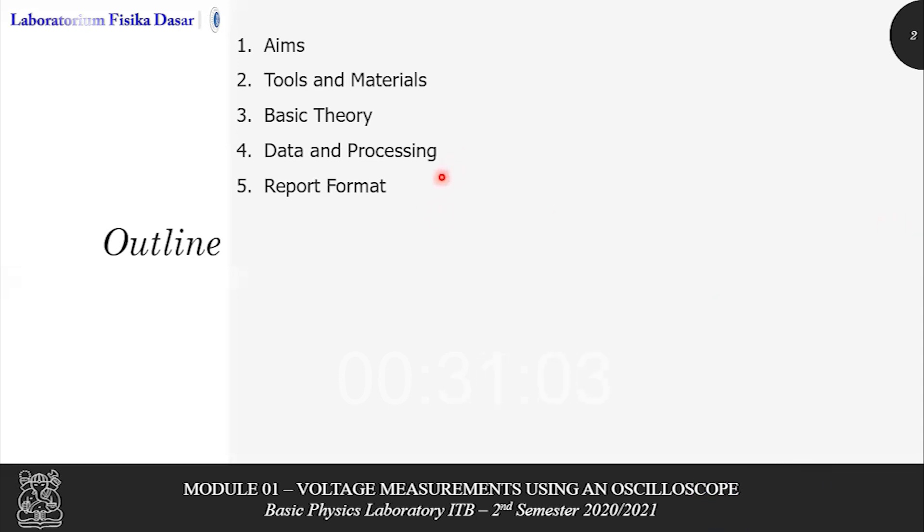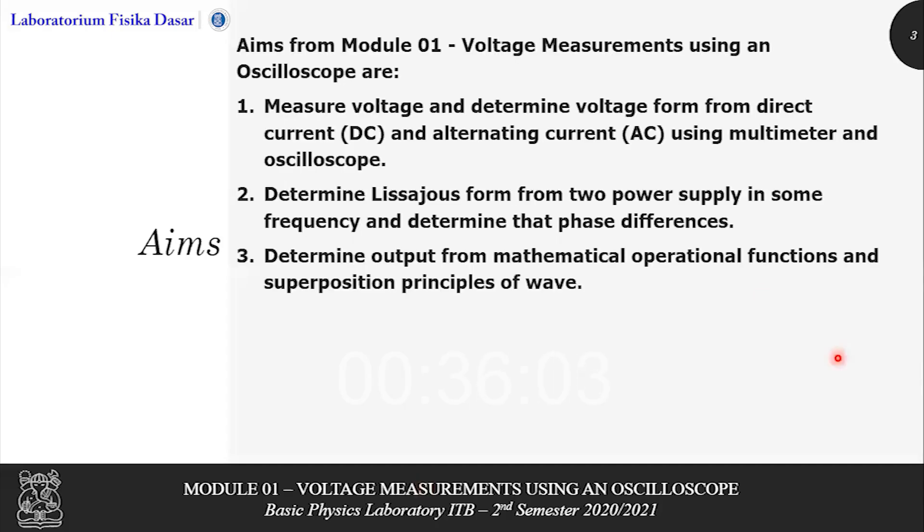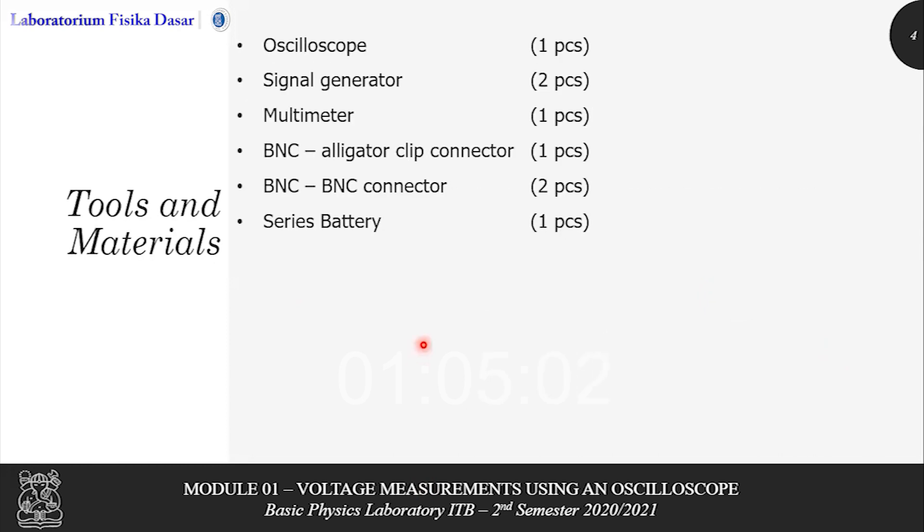There are three aims for this module which are: measure voltage and determine voltage form from direct current or DC and alternating current or AC using multimeter and oscilloscope. The second one, determine the waveform from two power supplies at some frequency and determine the phase differences. And the last one is determine output from mathematical operational functions and superposition principles of waves.